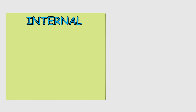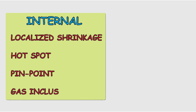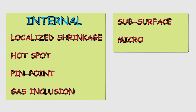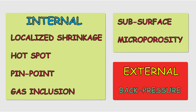The internal casting porosities are seen within the material of the casting and may at times be exposed on the surface, whereas the external casting porosities are seen on the margins of the casting. The internal casting porosities include localized shrinkage porosity, hotspot porosity, pinpoint porosity, gas inclusion porosity, subsurface porosity, and micro porosity. The external porosity includes back pressure porosity.